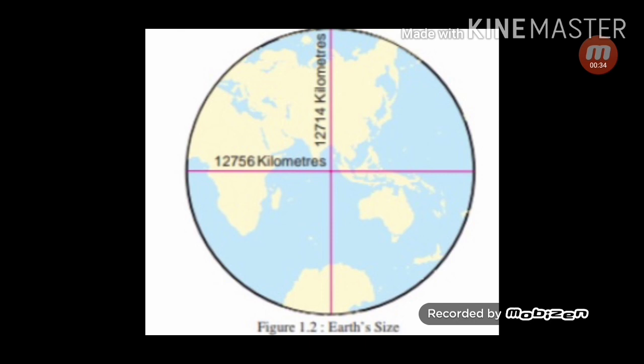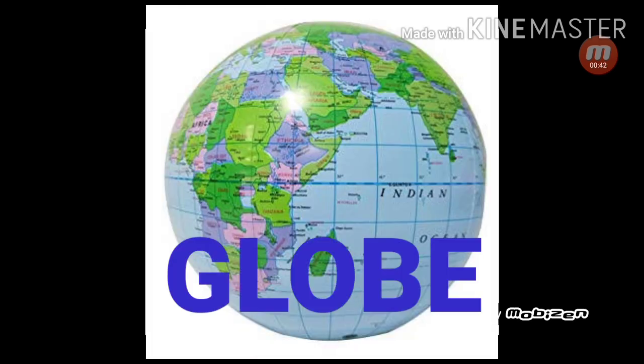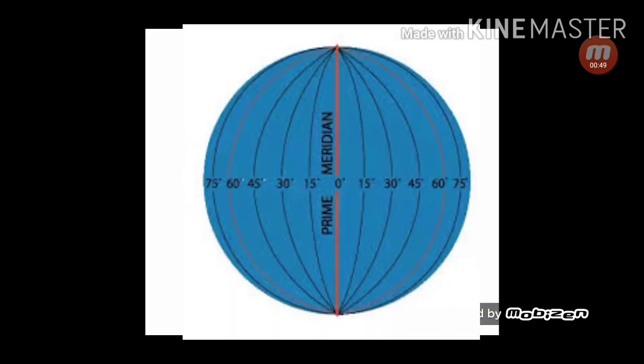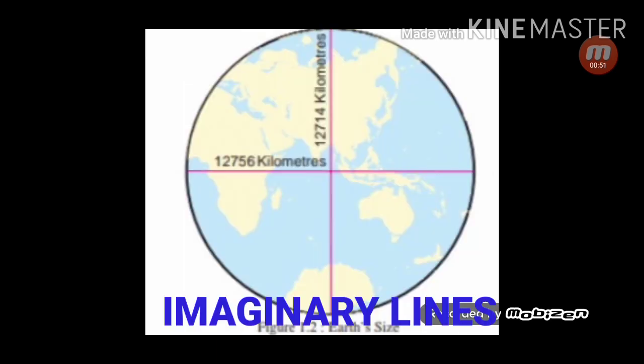In order to overcome this difficulty, geographers developed a miniature model of the earth in the form of a globe. This can be used to determine locations on the earth. One can actually draw horizontal and vertical lines on a globe, though not on the earth. Thus, they are imaginary lines on the earth.